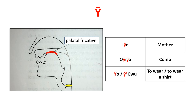The seventh sound is a voiced palatal fricative. The blade of your tongue pushes against your hard palate, forcing air through that point of contact, while the sides of your tongue press against your molars. Examples in Edo: 'iye' is the word for mother, 'iye' means my mother; 'ojija' is the Edo word for comb; and the verb 'to wear' is used with 'evu,' the word for shirt. This is also a voiced sound, as indicated by the vocal cord marked in yellow.